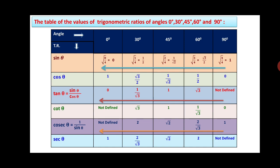For the cos θ column, write from 90° to 0° in reverse order. So cos 0° = 1, cos 30° = √3/2, cos 45° = 1/√2, cos 60° = 1/2, and cos 90° = 0. You need not worry separately — just write the sine values in reverse order. Now tan θ = sin θ / cos θ, so divide the sine value by the cosine value for each angle.